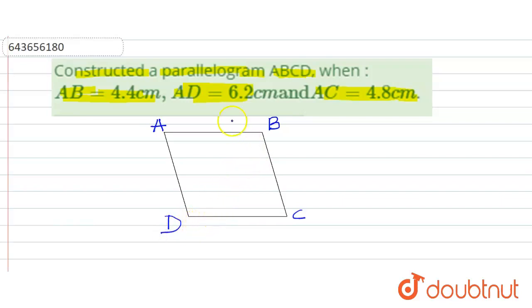So how can we construct a parallelogram? First we will draw a side AB, whose length is 4.8 centimeter.